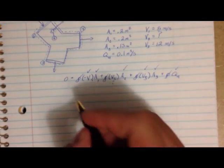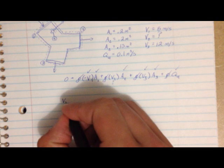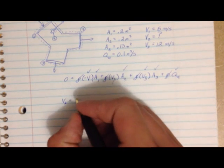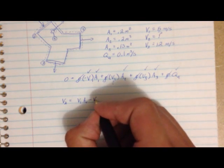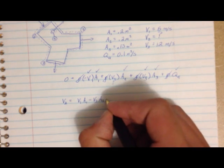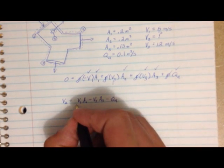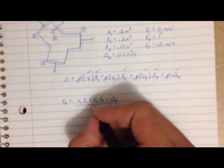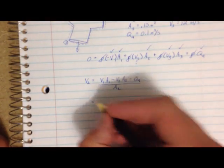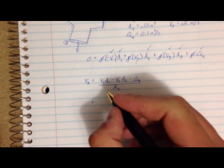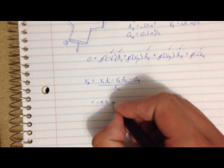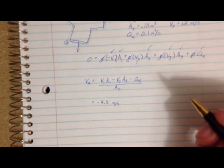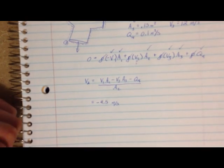We set up V2 equals V1 times A1, minus V3 times A3, minus Q4, all over A2. When we plug in all of those values, we get V2 equal to negative 4.5 meters per second.